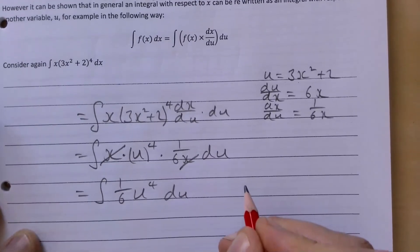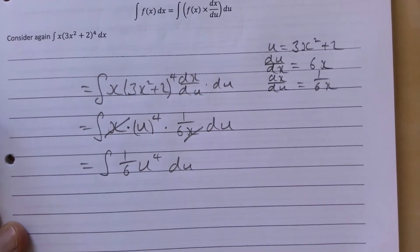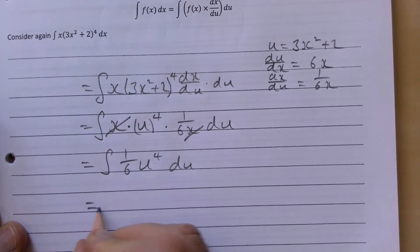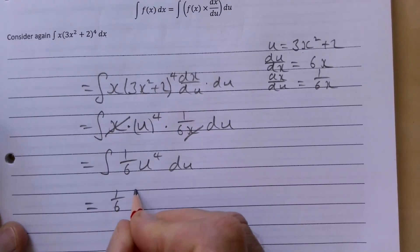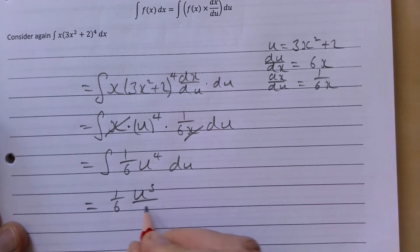I'll move that up so you can see it. Integrating then that, we will get 1/6 u, add 1 to the power of 4, divide by the new power, plus c.